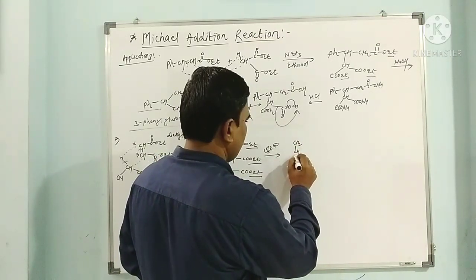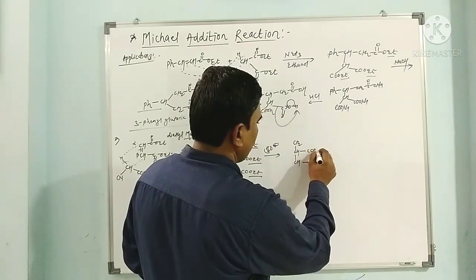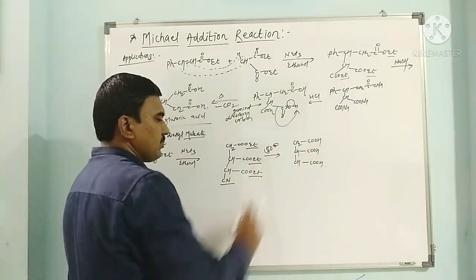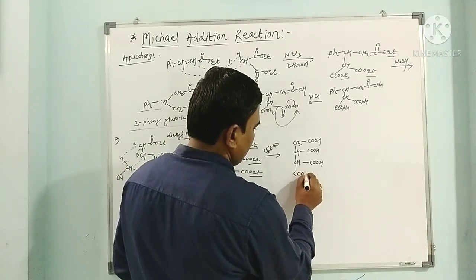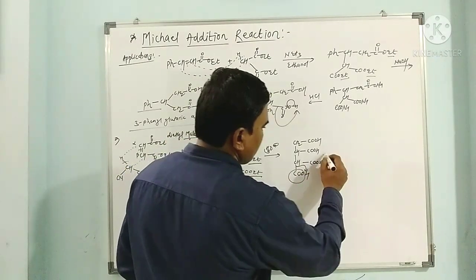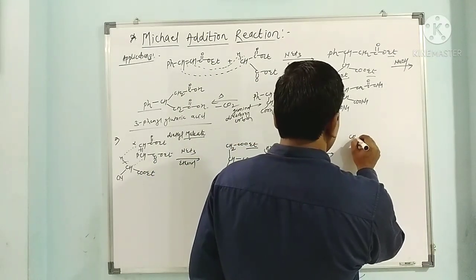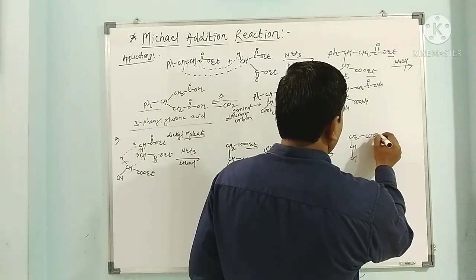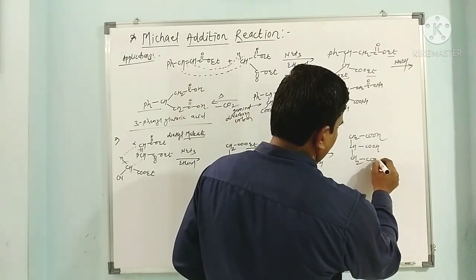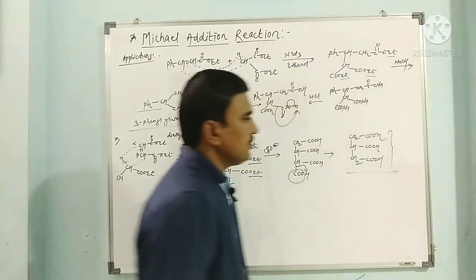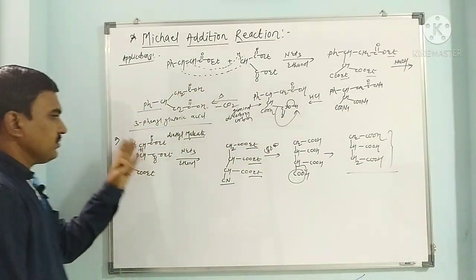Through decarboxylation of the tetracarboxylic acid, a proton shifts and we get the tricarboxy compound: CH2-CH-CH(COOH)2 with COOH. Here this is the tricarboxy compound obtained as a product. This is another compound obtained through this Michael addition application.